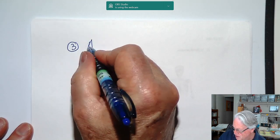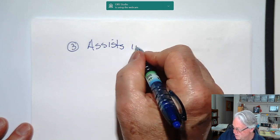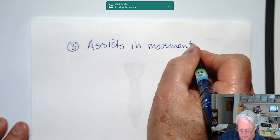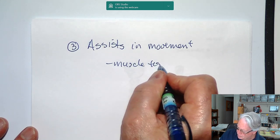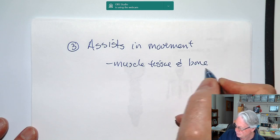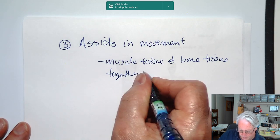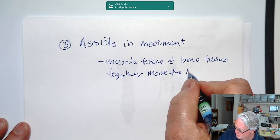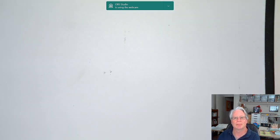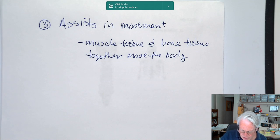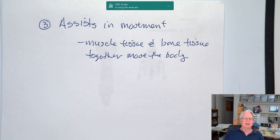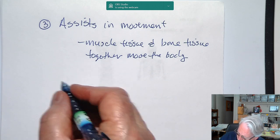Number three is that the skeletal system assists in movement. Muscle tissue and bone tissue work together to produce movement — moving the body from one place to another. There are other instances where bone is part of movement, such as the jaw: chewing food is a combination of muscle tissue and bone tissue, producing movement in the body. So function number three is to assist in movement.